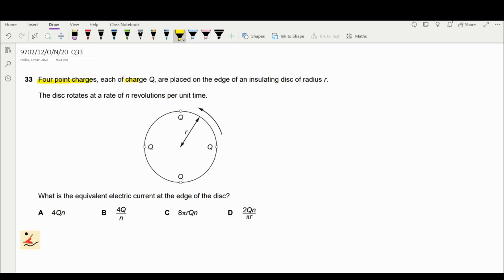Each one has a charge Q placed on the edge of an insulating disk of radius r. You have a radius r for your disk. The disk rotates at a rate of n revolutions per unit time.